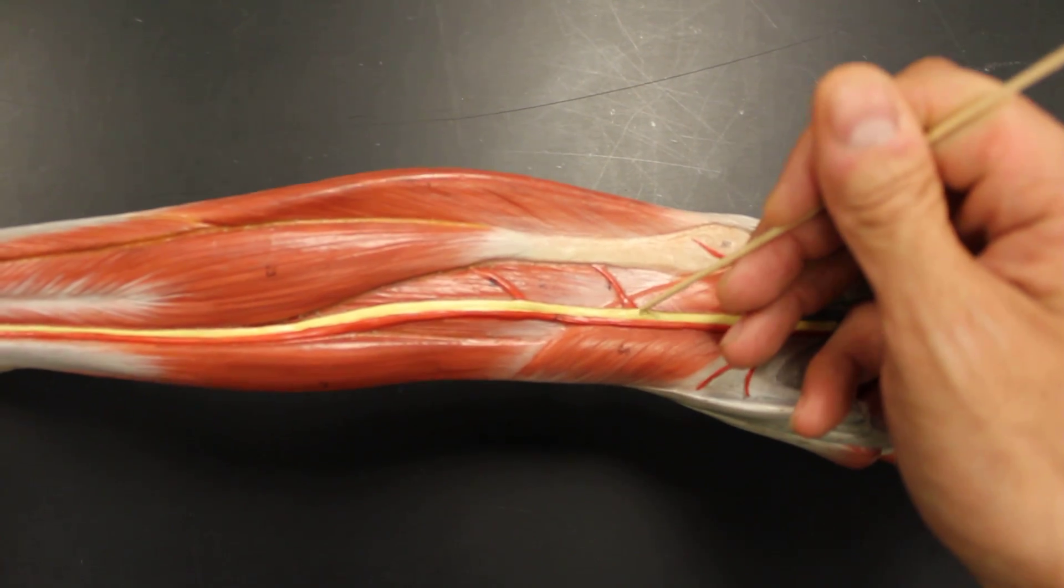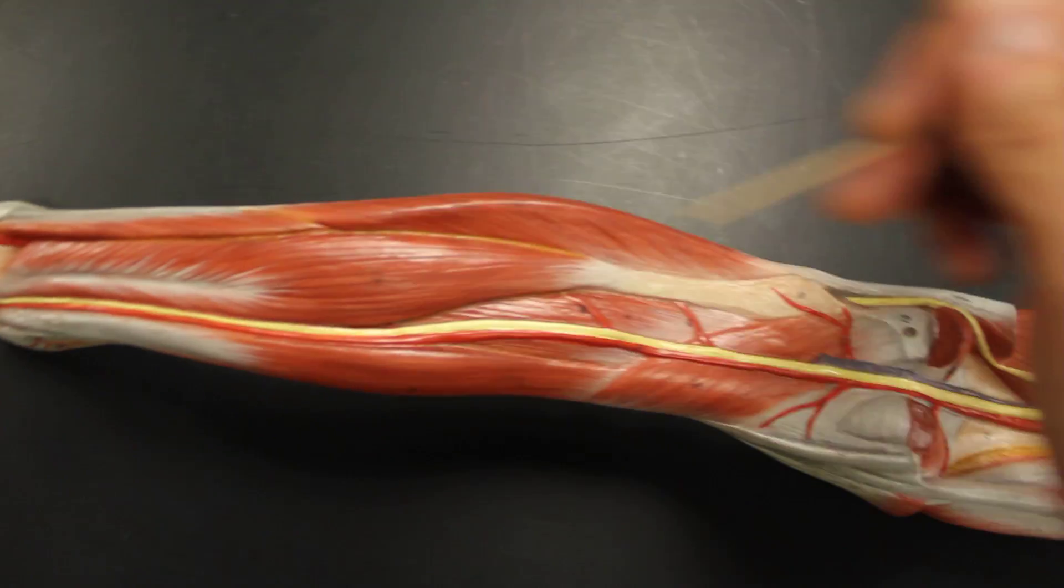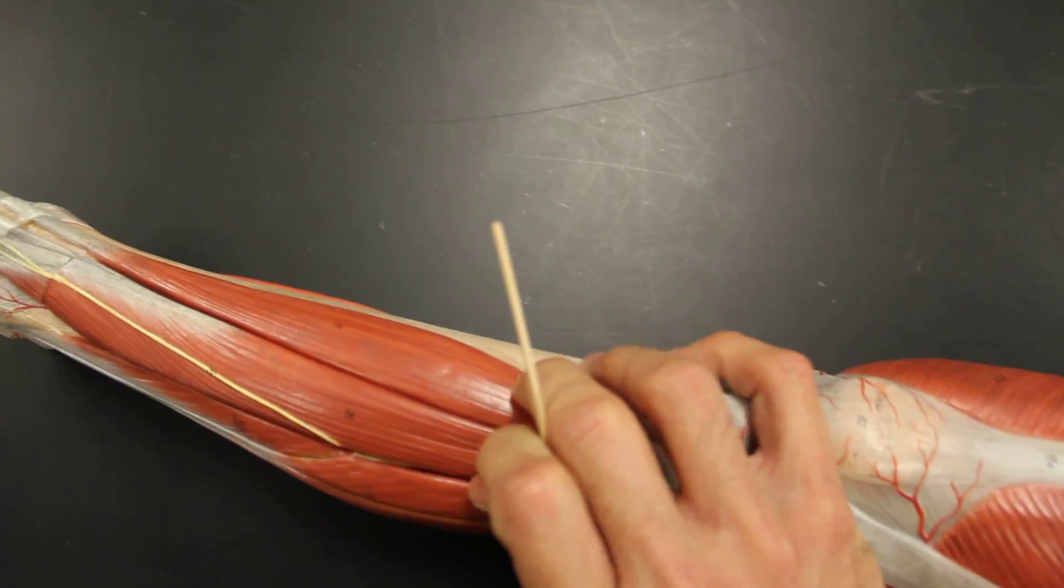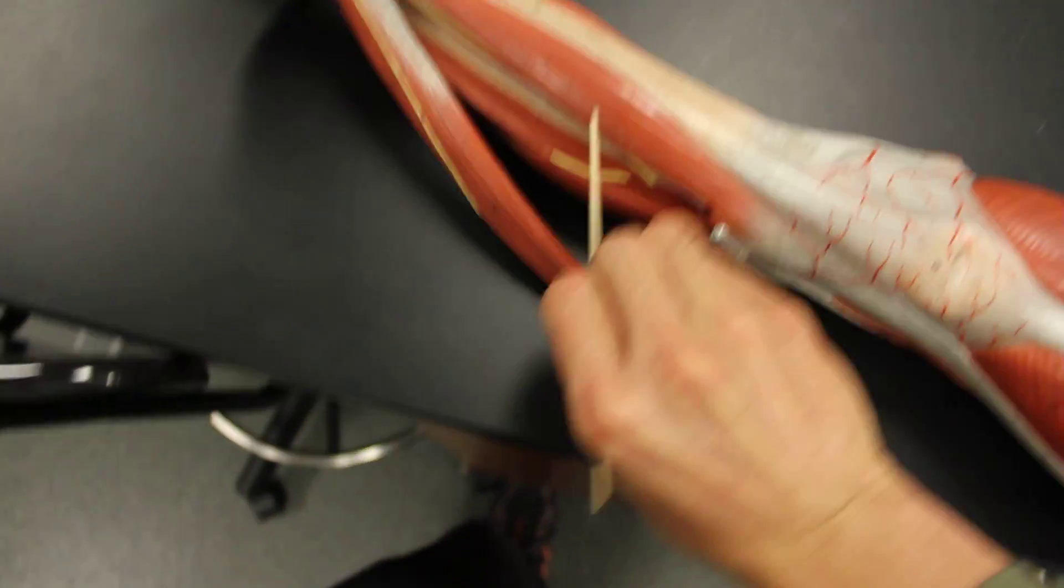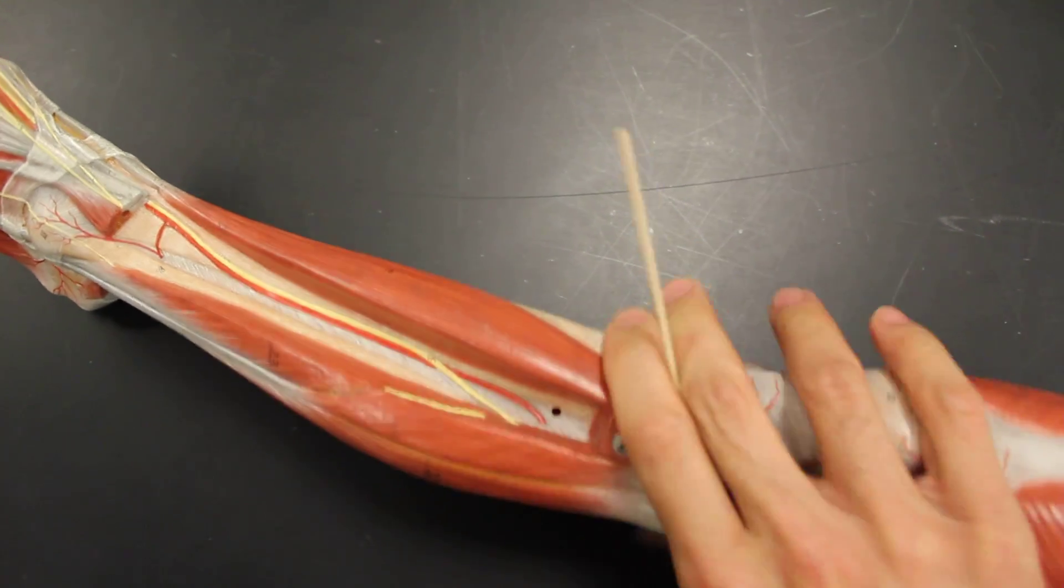The popliteal gets some genicular branches. And then the popliteal enters into the lower leg, becoming and splitting into the posterior, which is this entire length of the artery, and the anterior tibial, which we can actually see on the anterior side. There's the anterior tibial artery.